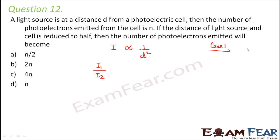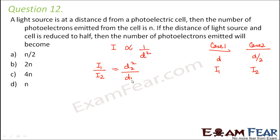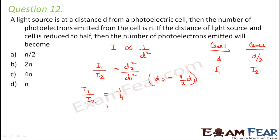We have two cases: case 1 where distance is d, and case 2 where distance is d/2. Assuming intensities I1 and I2 respectively, we can say I1/I2 = d2²/d1². Since d2 = d1/2, substituting gives I1/I2 = 1/4, therefore I2 = 4·I1.